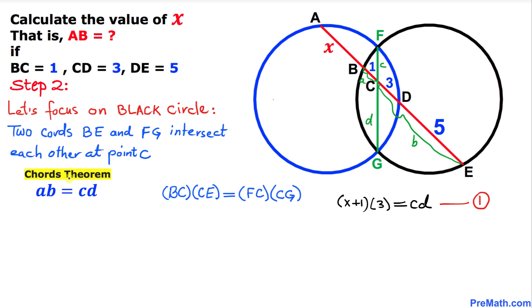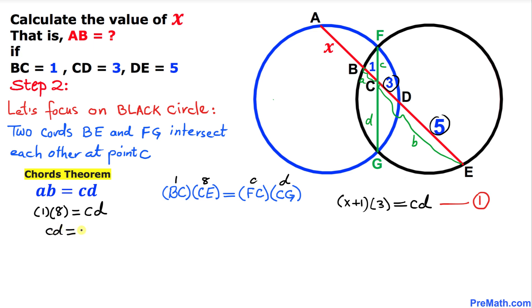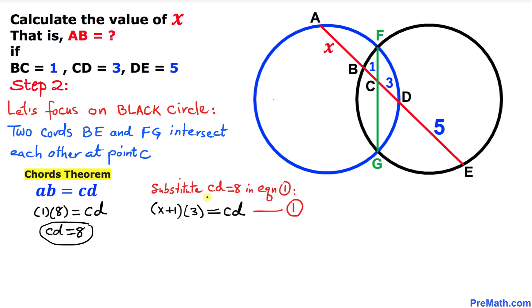In our case, a is 1 (since BC = 1) and b is 3 plus 5 which equals 8 (since CE = CD + DE = 3 + 5). So we get 1 times 8 equals c times d. Simplifying: c · d equals 8.